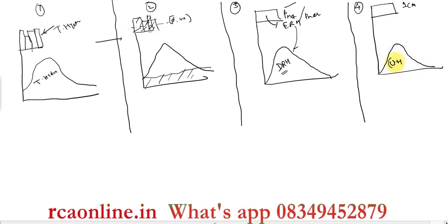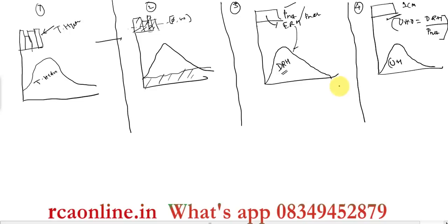All these steps were explained in my last video, so for detail you can watch that. The unit hydrograph ordinate is obtained as DRH divided by P_net. This is an important conclusion derived from the unit hydrograph concept.